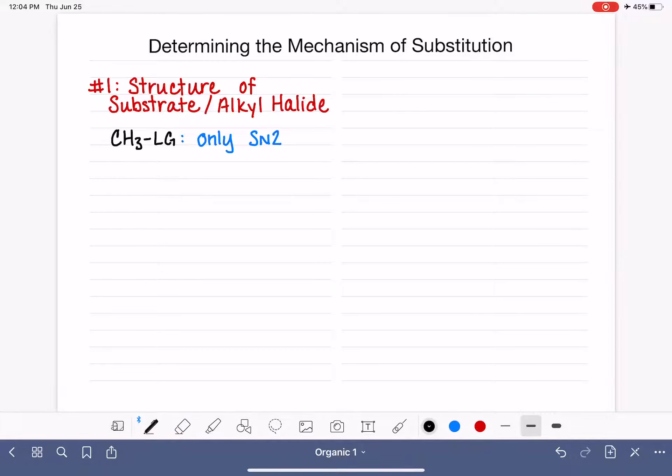That is also too unstable to do an SN1 reaction, so I'm going to write that as primary CH2RLG. So that's a carbon that has two hydrogens plus some other alkyl group with a leaving group on it. That is also only going to do the SN2 reaction.